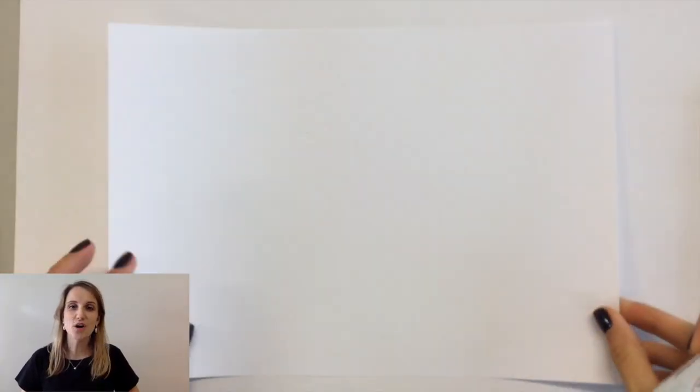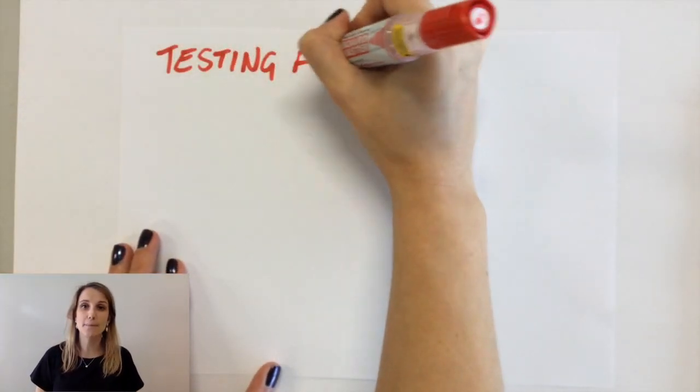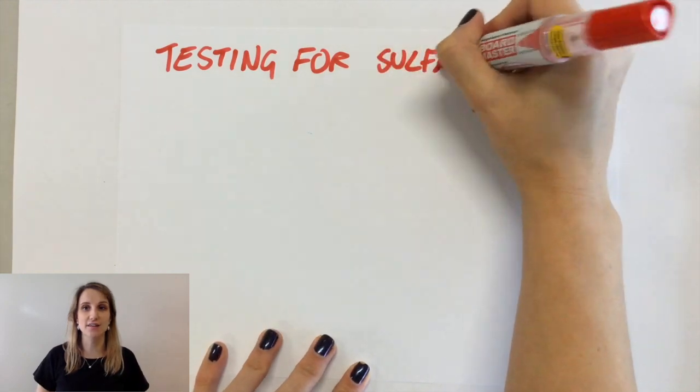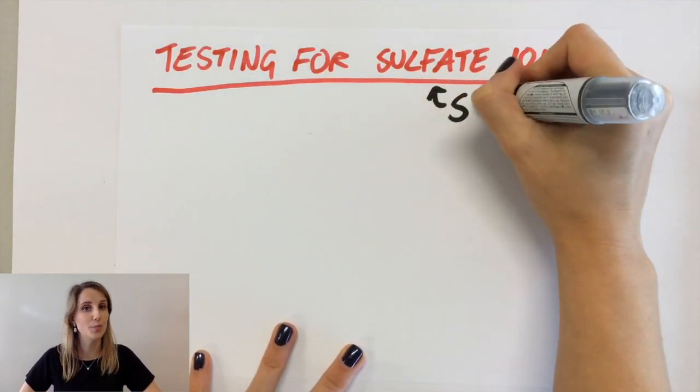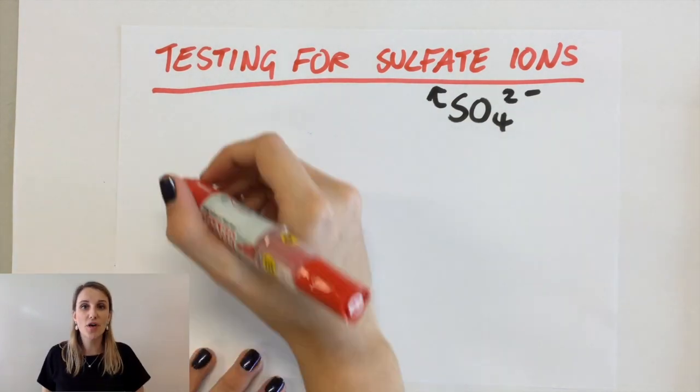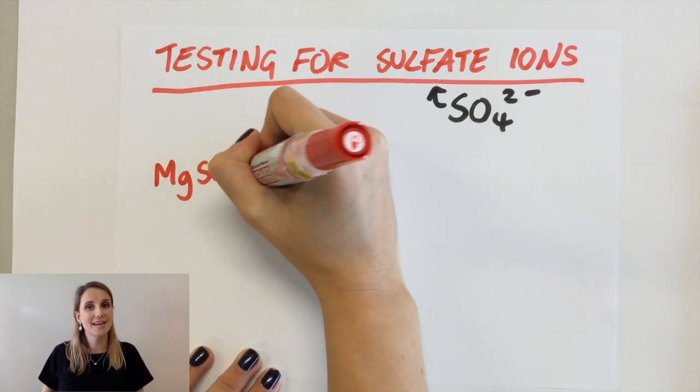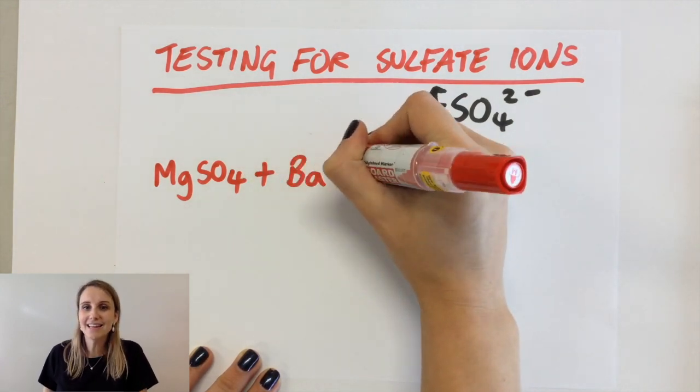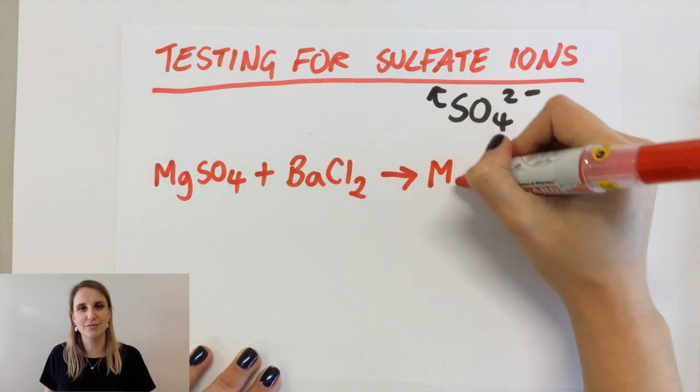Let's have a look at the equations to really show what's happening when I test for those sulfate ions. Remember a sulfate is SO4 2-, and for the sake of it today I'm going to pretend that the sample I was using was magnesium sulfate. In reality it could be any sulfate, it doesn't really matter.